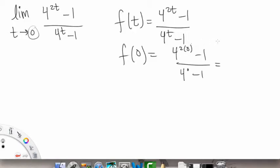and anything to the 0 power is just going to equal 1, so this will be 1 minus 1 over 1 minus 1, which turns out to be our indeterminate form of 0 over 0.